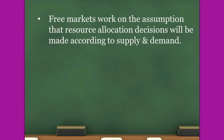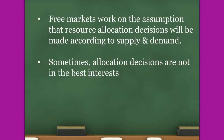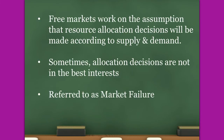Free markets work on the assumption that resource allocation decisions will be made according to supply and demand. Demand for a product goes up — you're a producer, you want to supply more to the market in order to make more money. Sometimes allocation decisions are not in the best interest, and this is also tied in with our four types of efficiency. Allocative efficiency looked at satisfying the needs and wants of the economy, but didn't look at the rights and wrongs of those allocation decisions. And these are what we refer to as market failure — something has gone wrong, and if anything doesn't work with our assumptions, we refer to that as market failure.